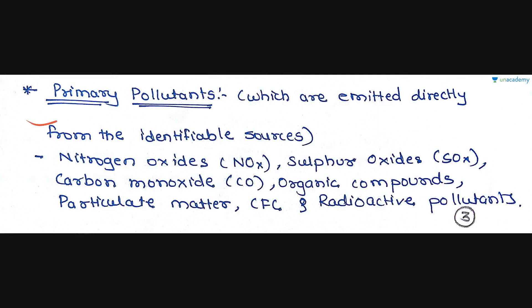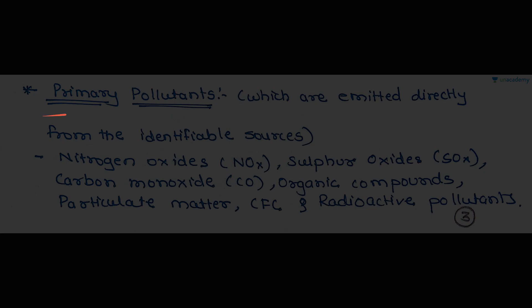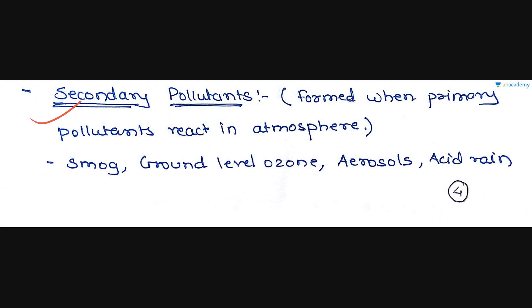Primary pollutants, which are emitted directly from identifiable sources, include nitrogen oxides, sulfur oxides, carbon monoxide, organic compounds, particulate matter, CFC (chlorofluorocarbon), and radioactive pollutants. Secondary pollutants are formed when primary pollutants react in the atmosphere. Types of smog include industrial smog and photochemical smog.